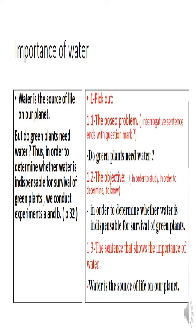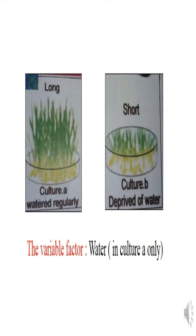Also, pick out the sentence that shows the importance of water. We go to the first sentence: 'Water is the source of life on our planet.' Now, looking at the experiment on page 32: culture A is watered regularly, while culture B is deprived of water. The variable factor — meaning the factor that was changed between A and B — is water, since A was given water and B was deprived of it.